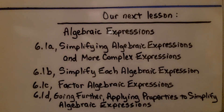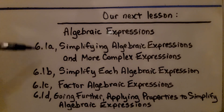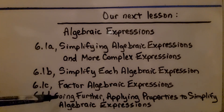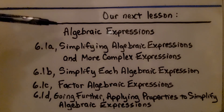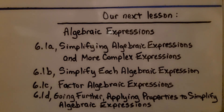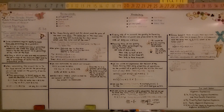We're finished with Module 5 and moving on to Module 6. In 6.1, which is split into four parts with a going-further section, we'll be learning about algebraic expressions — simplifying algebraic expressions and more complex expressions. For these multiple percent problems, just remember to do each percentage separately added to the original amount, then add them all together at the end.